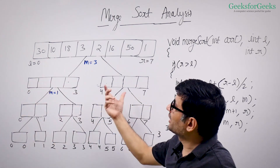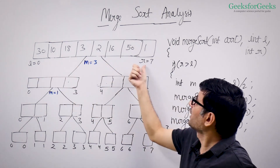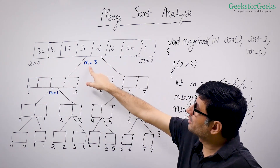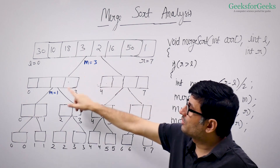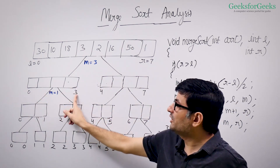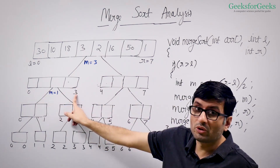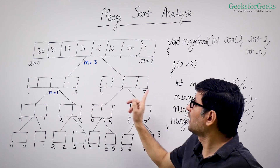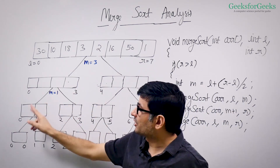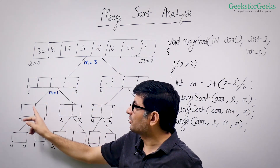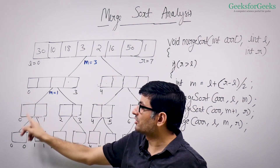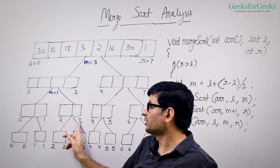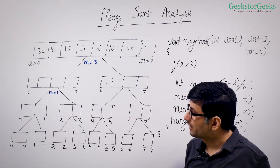Here I have taken a sample example. L is 0 and R is 7. You compute the mid — mid is 3. Then you recursively call from 0 to 3 (L to M), then from M plus 1 to R. This further makes calls for 0 to 1 and 2 to 3. So all these calls happen this way.